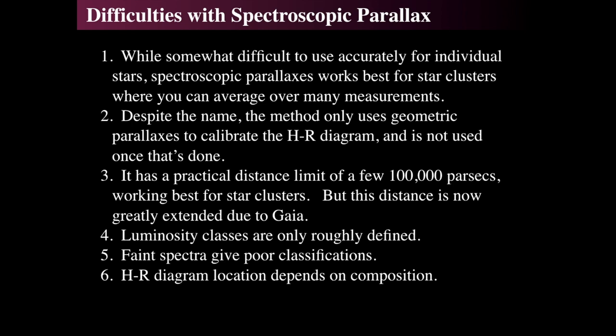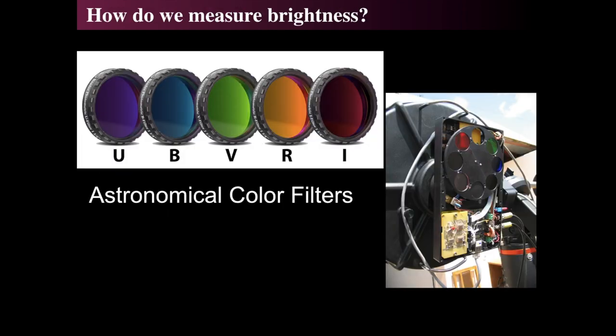The main difficulties of spectroscopic parallax at introductory level are: spectroscopic parallax is not really parallax, luminosity classes are hard to determine, and faint spectra are really tough to use. So getting good spectra is critical. How can we get around needing good spectra? What's called poor man's spectroscopy is using standard filters — the Johnson U, B, V, R, and I filters, with B and V being the most common.